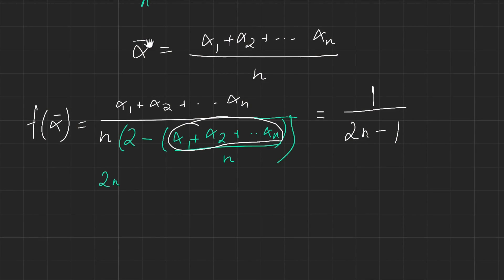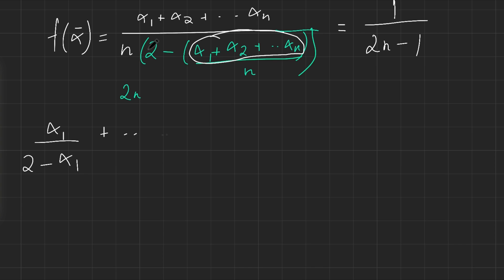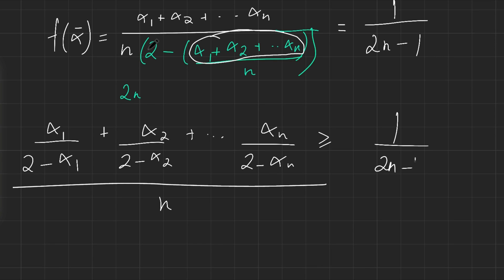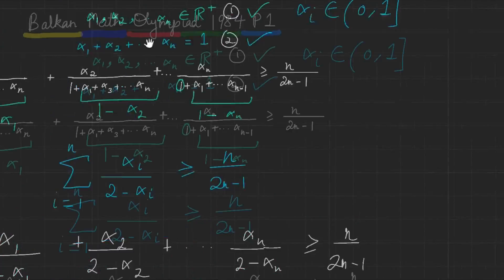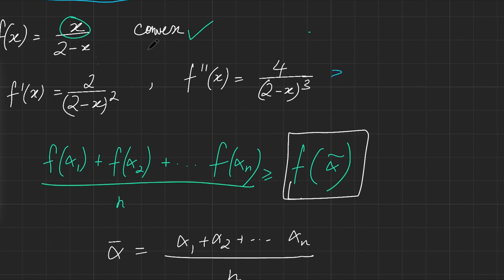So we've proved that [α₁/(2−α₁) + α₂/(2−α₂) + … + αₙ/(2−αₙ)] / n ≥ 1/(2n−1). Multiply both sides by n and you're done. That's the first problem of the Balkan Math Olympiad — a nice application of Jensen's inequality. If you know any other way to verify convexity faster than taking second derivatives, let me know in the comments. If you enjoyed this, leave a like and subscribe!